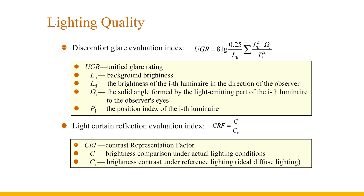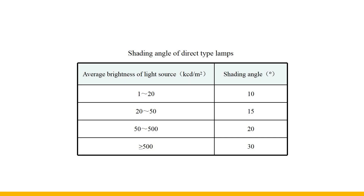Light curtain reflection is caused by the regular reflection of the visual object, which reduces the brightness contrast between the visual object and the background, making it difficult to see details. It is a phenomenon where regular reflection and diffuse reflection overlap. The evaluation index of light curtain reflection is the contrast representation factor, used to evaluate the influence of light curtain reflection on the visibility of work. It equals the ratio of the task visibility under a given lighting condition to the task visibility under a reference lighting condition, usually using luminous contrast instead of visibility. To reduce direct glare, the shielding angle of the lamps should not be less than the specified value in the table.